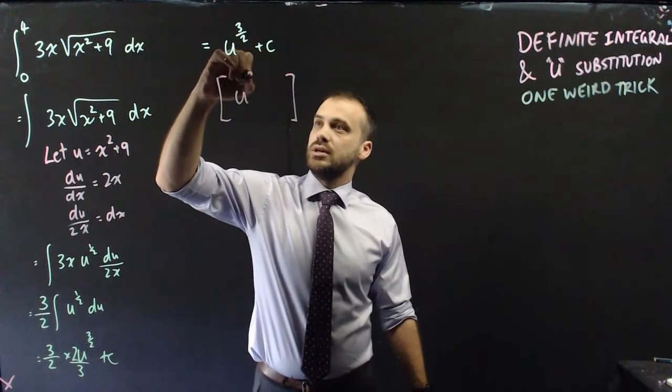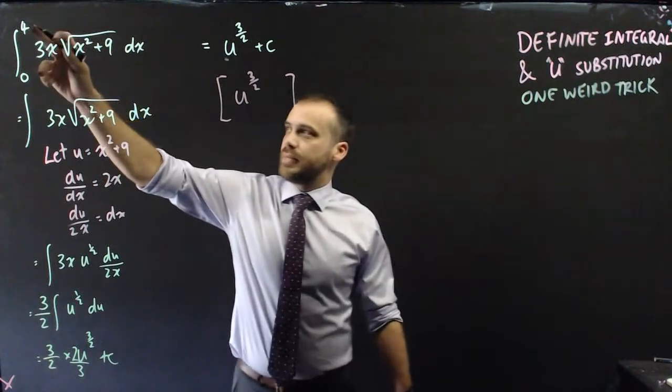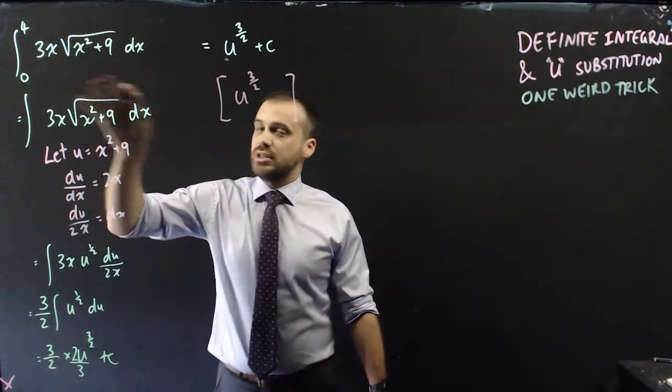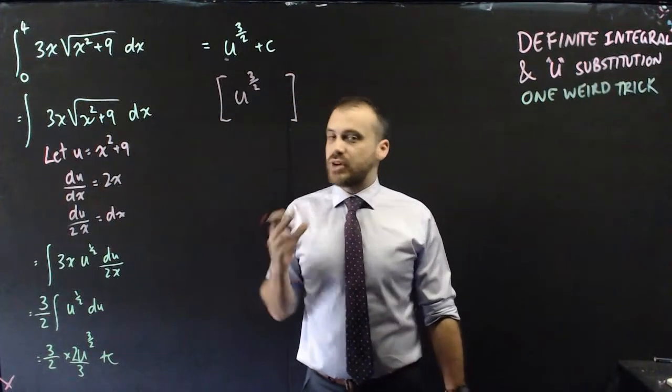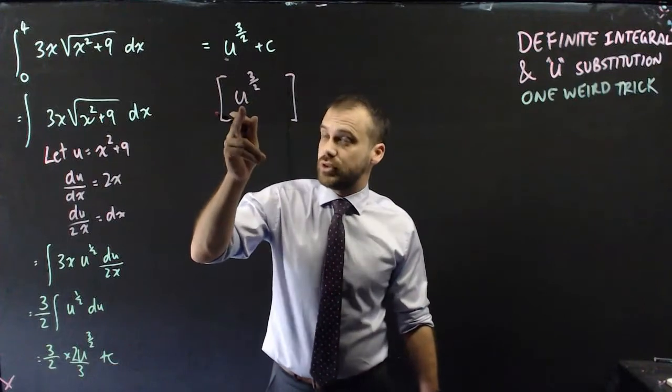So we've got u to the 3 over 2, but we can't put 4 and 0 here, because those are our terminals if our function is in terms of x. But our function's not in terms of x, our function's in terms of u.